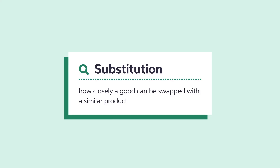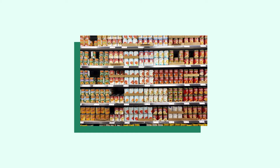Substitution refers to how closely a good can be swapped with a similar product. The more easily substituted a good is, the more elastic it tends to be. Think of a highly competitive market like canned soups — since many of them are highly substitutable, there tends to be more demand for soups that are lower in price, all things being equal. Sometimes the demand of one good is dependent on the price of close substitutes; this concept is called cross-price demand elasticity.